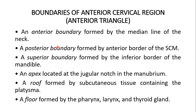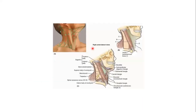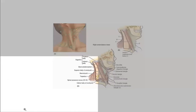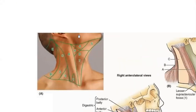So what is the anterior triangle? You can see here that the anterior boundary is formed by the median line of the neck, and the posterior boundary formed by the anterior border of the sternocleidomastoid, and the superior boundary formed by the inferior border of the mandible. The apex is located at the jugular notch in the manubrium, and there's a roof formed by the subcutaneous tissue containing the platysma, and the floor is formed by the pharynx, larynx, and thyroid gland. You can see this picture, which tells the story about these various aspects of the triangle of the neck — this is the area showing the various triangles.